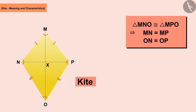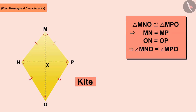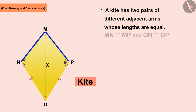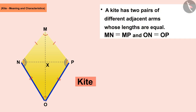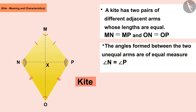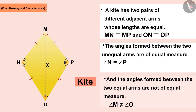The corresponding angles MNO and MPO are also of equal measure. So we can say that a kite has two pairs of different adjacent arms, and the two sides of each pair are mutually equal. The angles formed between the two unequal arms are of equal measure, and the angles formed between the two equal arms are not of equal measure.